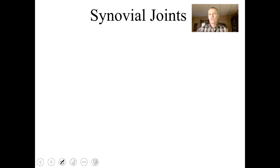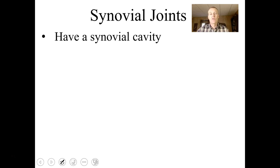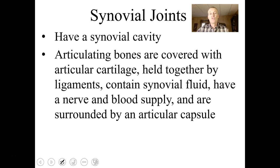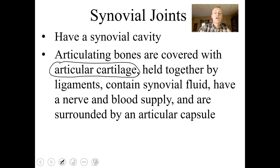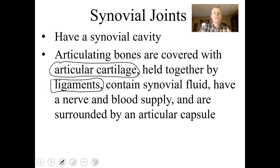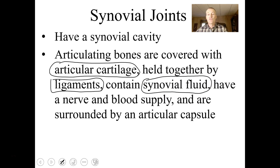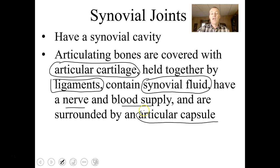The joints I mainly want to talk about are synovial joints. These are super complex. Synovial joints do have a synovial cavity. The articulating bones are covered with articular cartilage — a hyaline cartilage that cushions bones from impact. Ligaments hold the bones together. The joint contains lubricating synovial fluid that reduces friction. They have a nerve and blood supply and a capsule surrounding them made of dense irregular connective tissue — an articular capsule.